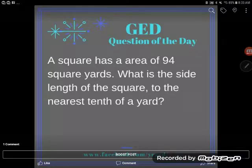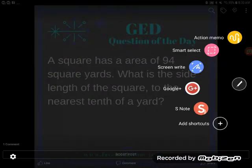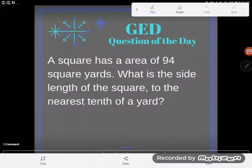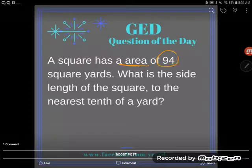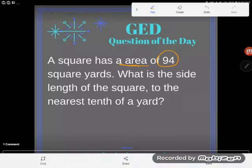It's GED question of the day time, and our problem today reads: a square has an area—oh let me get my pen out—so a square has an area of 94 square yards, and then what is the side length of the square to the nearest tenth of a yard.